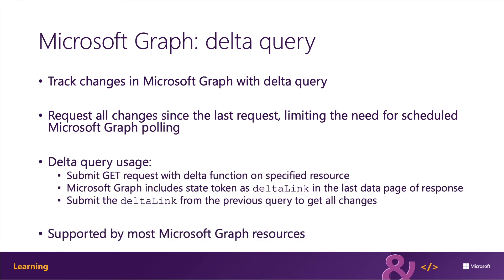Delta query is supported by many Microsoft Graph resources, including directory roles, drive items, calendar events and the primary calendar view, groups, mail folders and messages in a folder, personal contact folders and contacts in a folder, and users.